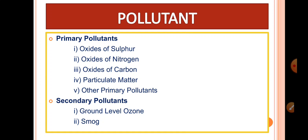Ground level ozone is found near the Earth's surface. This is a secondary pollutant — it is not emitted directly. It forms from two chemical components reacting, making it a secondary pollutant rather than a primary pollutant.